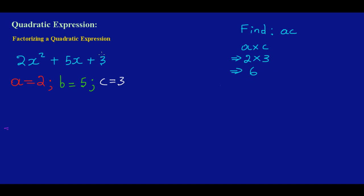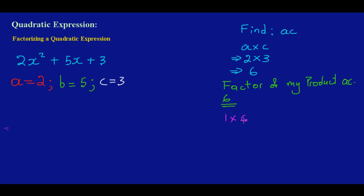After finding my product, the next thing I need to do is find the factors of ac. My product is 6, so I need to find factors of 6. Factors of 6 are: 1 times 6 gives me 6, and also 2 times 3 gives me 6.